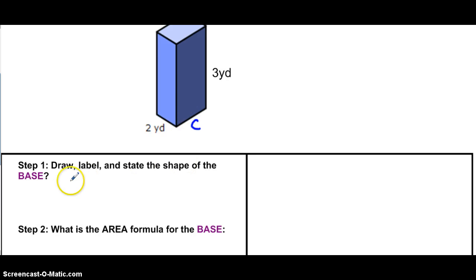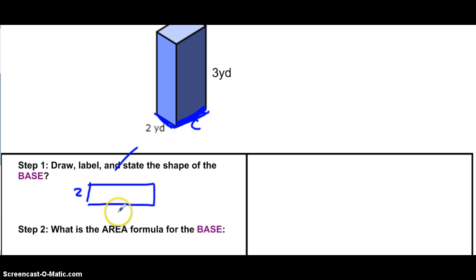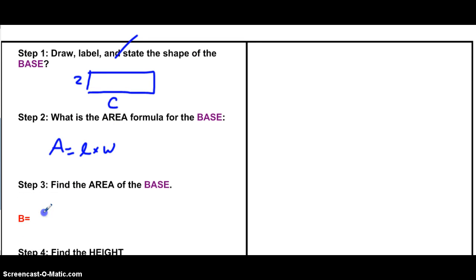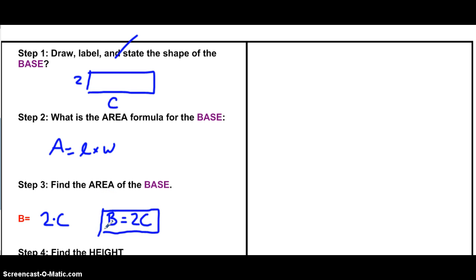The back-solving uses the same exact steps as before. First, draw and label the shape of the base. The base is a rectangle. This side looks like my width, so that's 2. This side over here looks like my length, so it's just C — I don't know what it is, they just gave me C. To find the area, use the rectangle formula: length times width. My base is going to be 2 times C, which is just 2C. That's the area of my base.